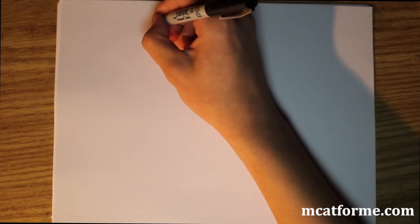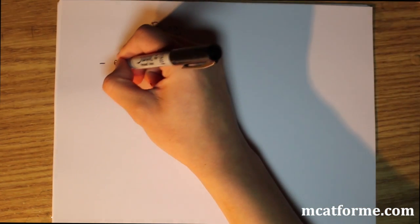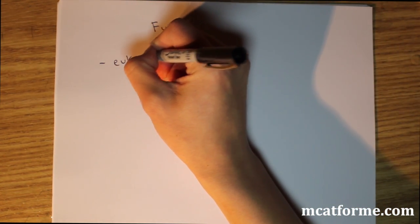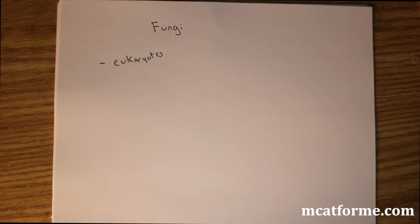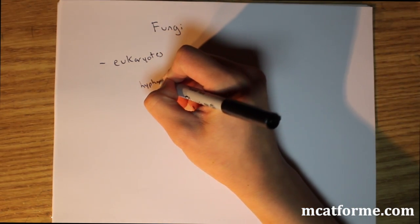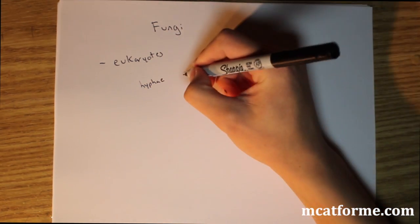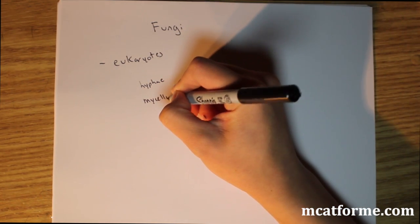And I guess the final thing that I want to bring up, I mentioned it before. So fungi, fungi are eukaryotes. And that's one thing that you have to remember. You don't need to know all that much about fungi. Fungi, you can know that they're broken down into little cells called hyphae and multiple cells are called mycelia or mycelium.